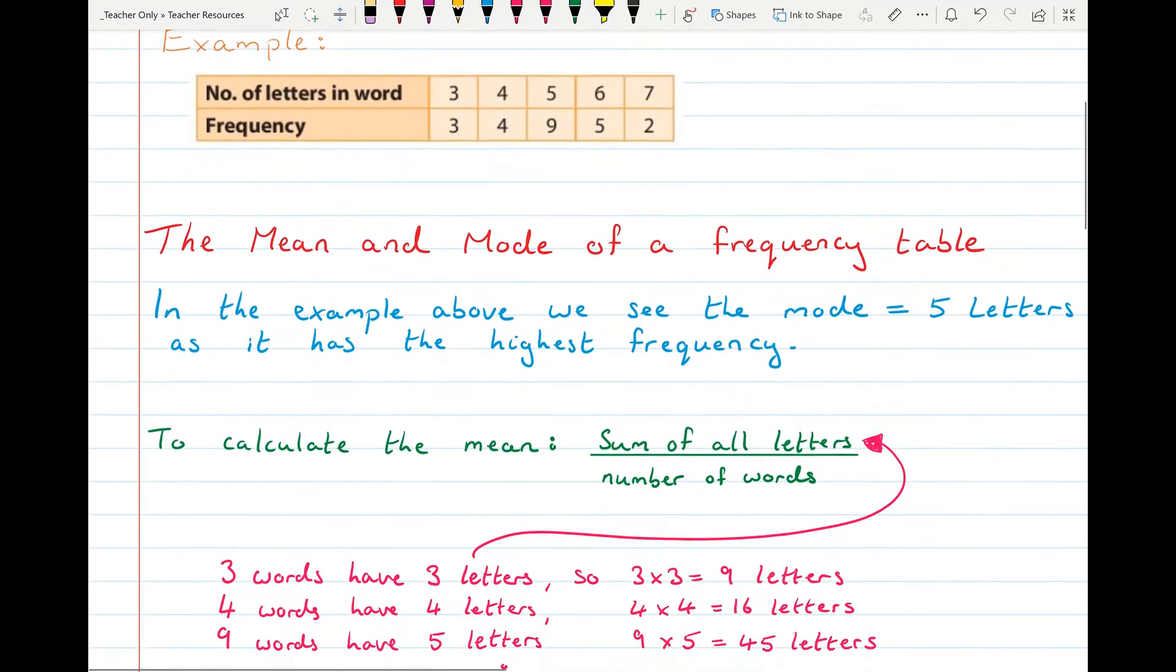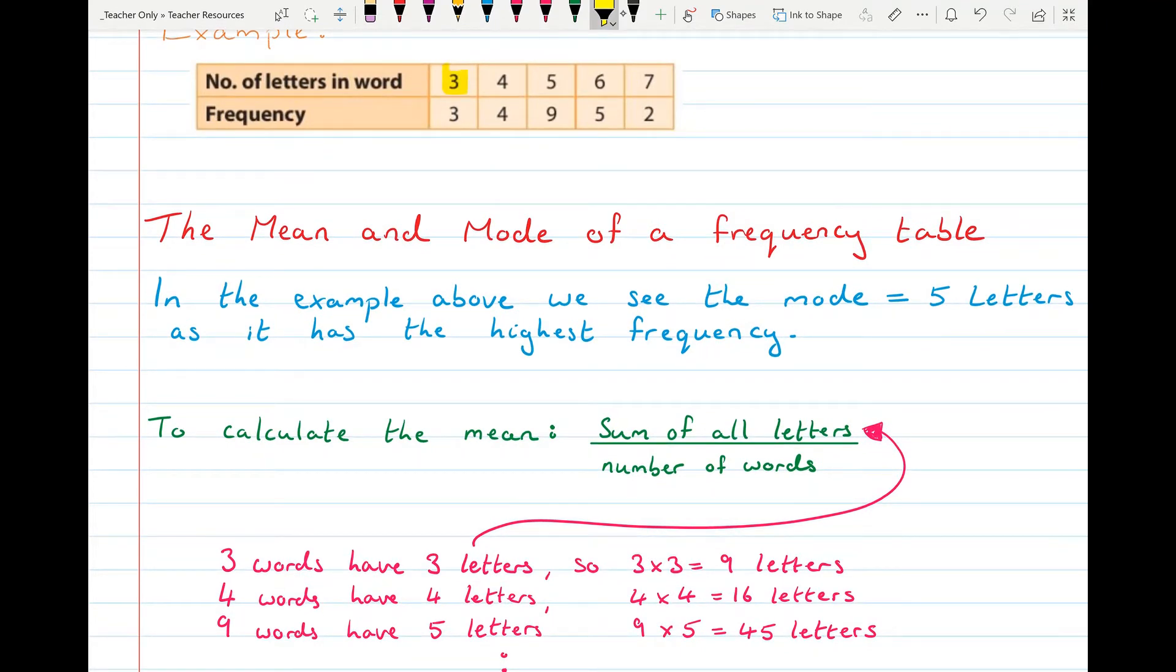So what we need to do is there were three words with three letters, so we go three times three, so that was nine letters. And then we go there were four words with four letters, so we go four times four which is 16 letters. There were nine words with five letters, so nine times five is 45 and you continue that on and you add up all your letters.